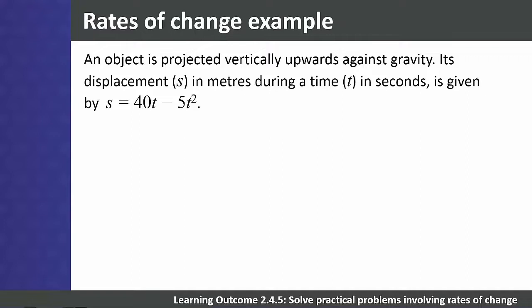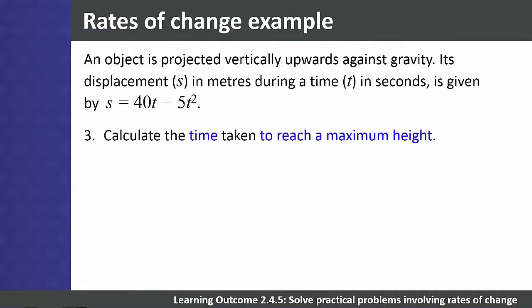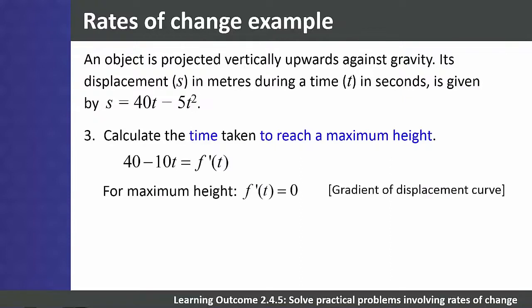Question 3: calculate the time taken to reach maximum height. From level 3, to find a maximum we let the gradient of the curve equal zero. The first derivative gives the gradient, so 40 - 10t = 0. Solving gives t = 4 seconds for the object to reach maximum height.